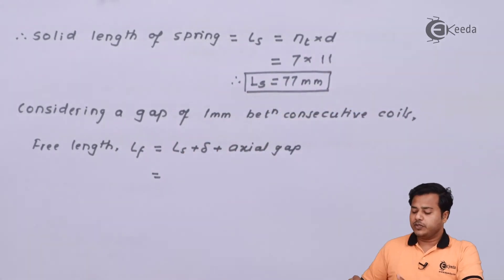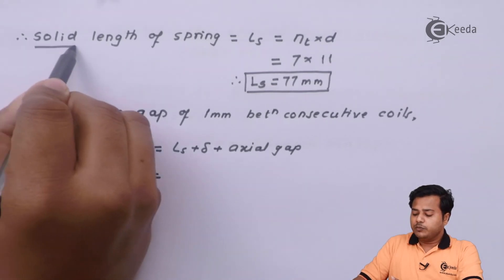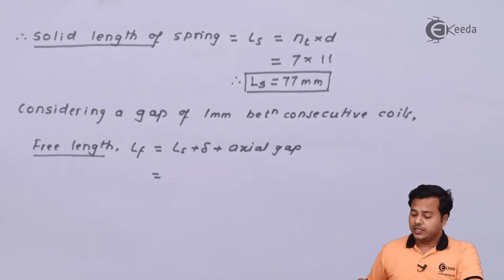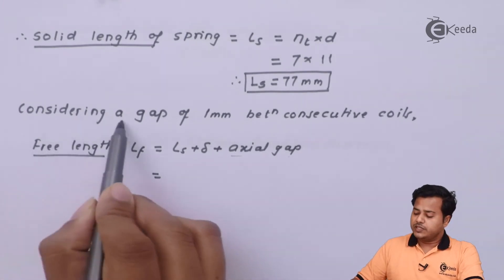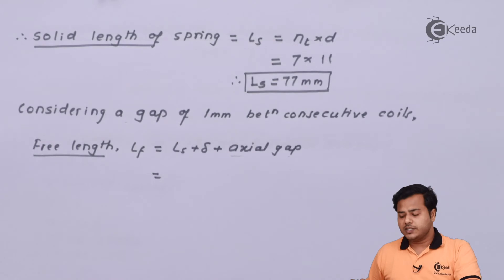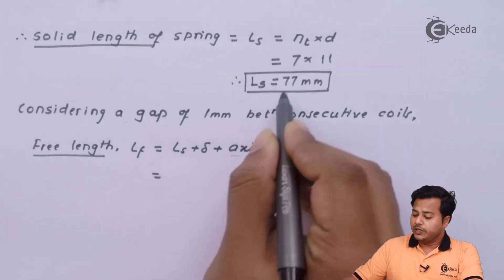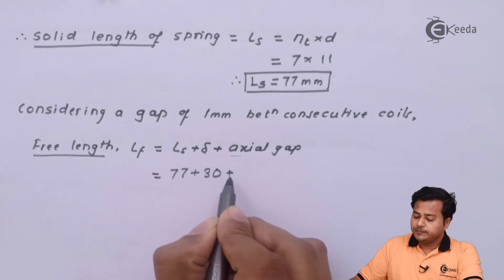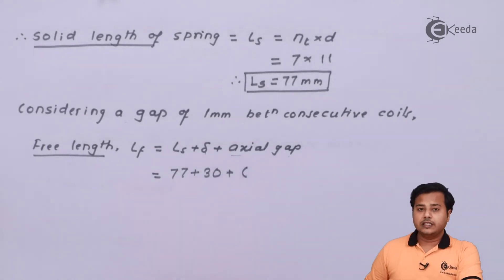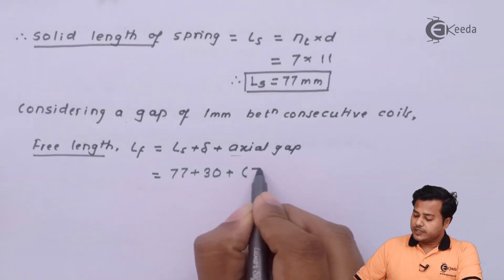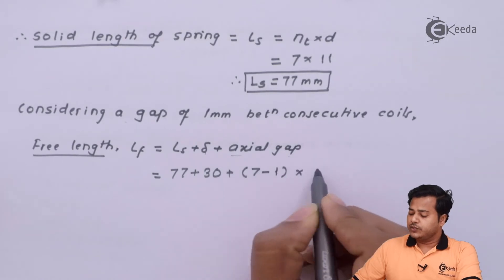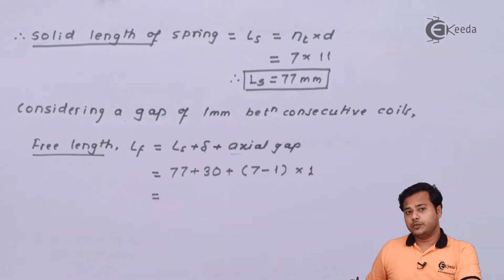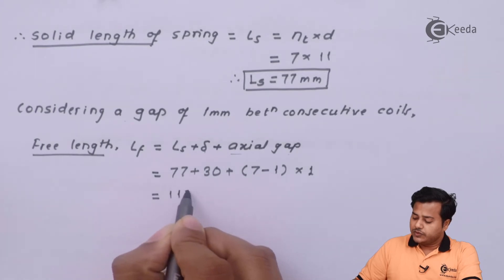Next, we need to find the free length, which requires considering a gap between coils. Assuming an axial gap of 1 millimeter between consecutive coils, the free length is given by solid length plus maximum deflection plus the total axial gap. The total axial gap is (7 minus 1) times 1 mm, which equals 6 mm. Therefore, free length equals 77 plus 30 plus 6, giving 113 millimeter.